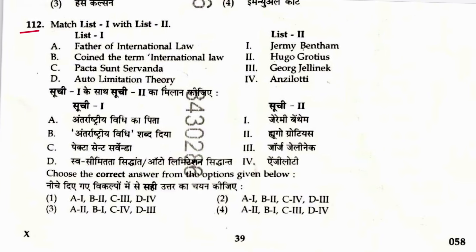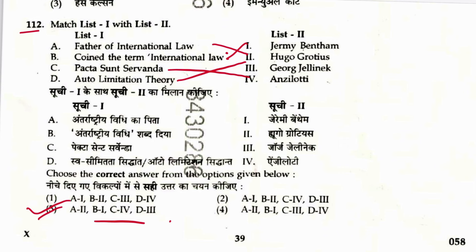Question 112: Who is called the Father of International Law? Hugo Grotius — asked many times. Who coined the term 'International Law'? That was Jeremy Bentham. Match includes Anzilotti — auto-limitation theory; George Jellinek — auto-limitation theory. Sequence is 2, 1, 4, 3. Answer is 3.